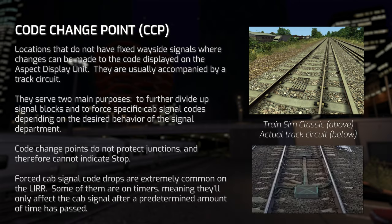There is another lesser known component called a code change point. Code change points, or CCPs, are locations that don't have a fixed wayside signal but where changes can be made to the code displayed on the ADU. They are usually accompanied by a track circuit. There are two main uses: to further divide up signal blocks, and to force specific cab signal codes depending on the desired behavior of the signal department. Most CCPs can be identified by the presence of a track circuit between the rails. They don't protect junctions and cannot indicate stop. As an example, the track circuit near St. Albans is used to force a cab signal drop of 40 when heading westbound.